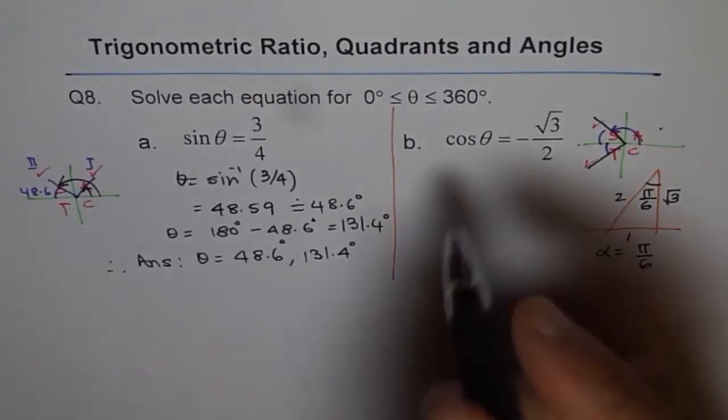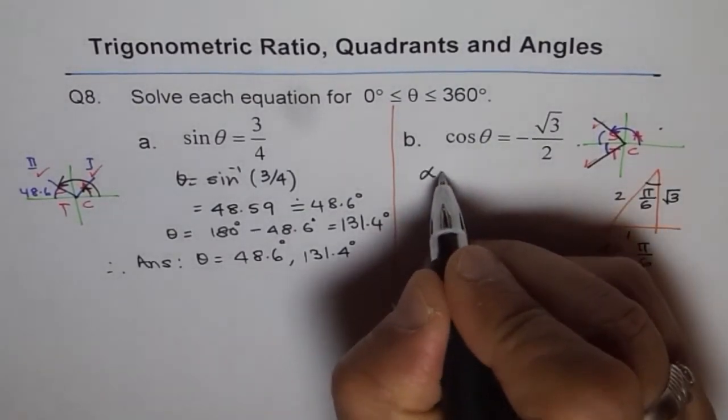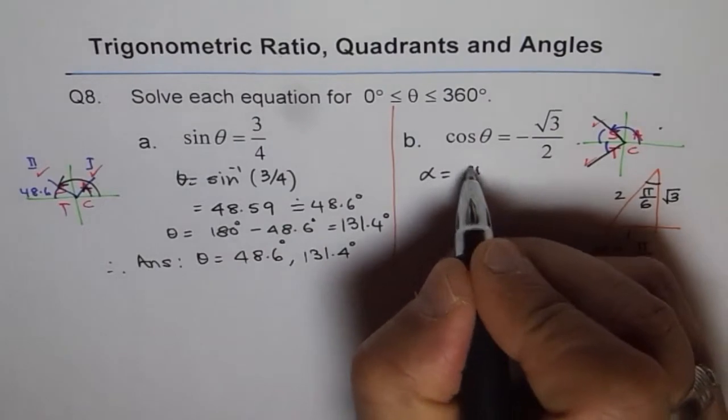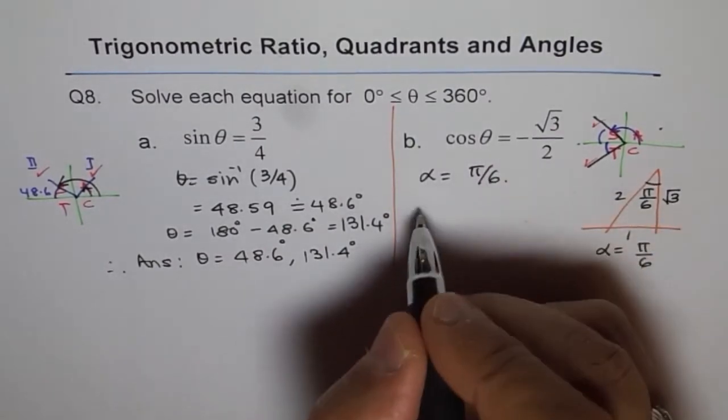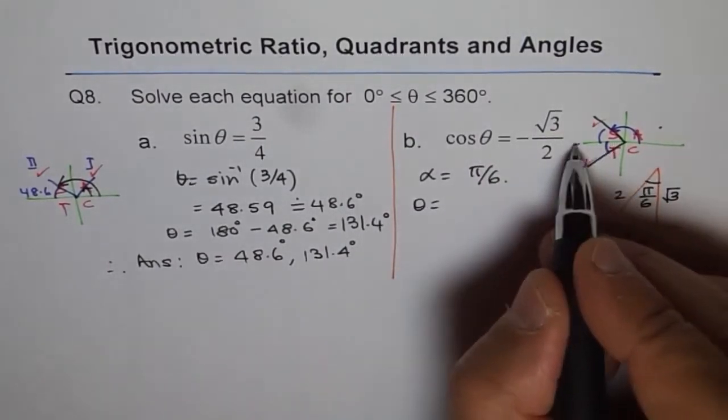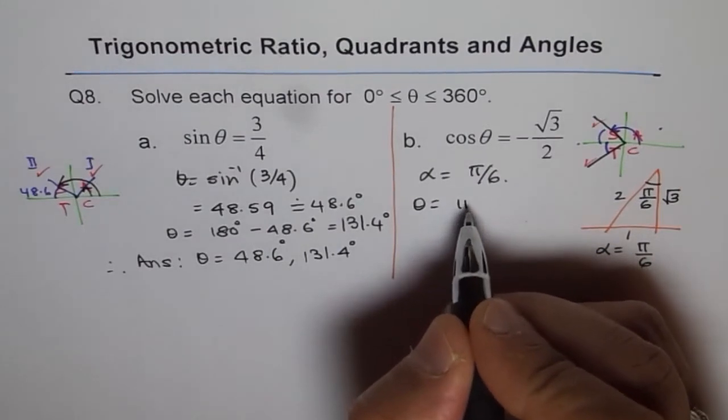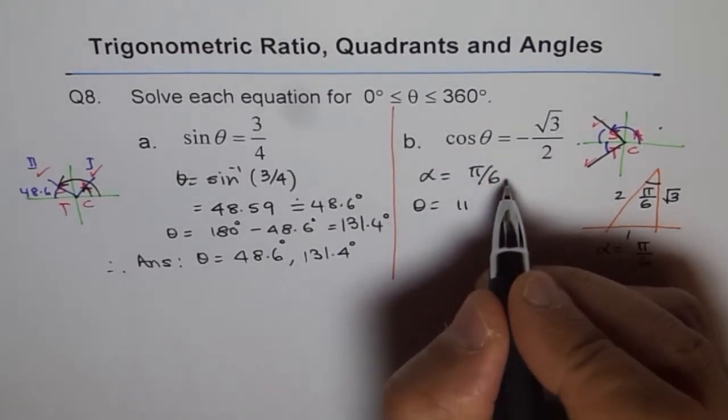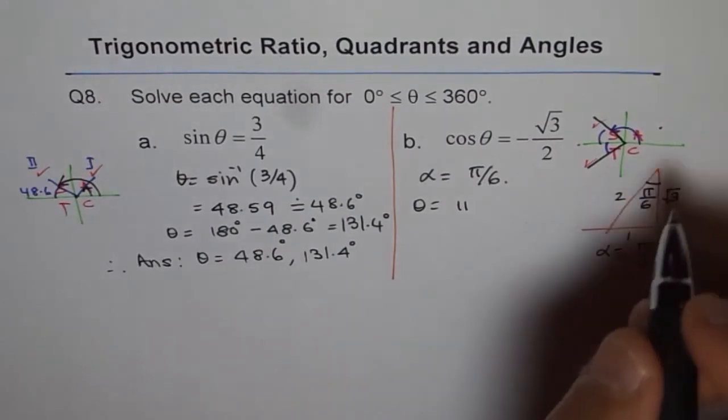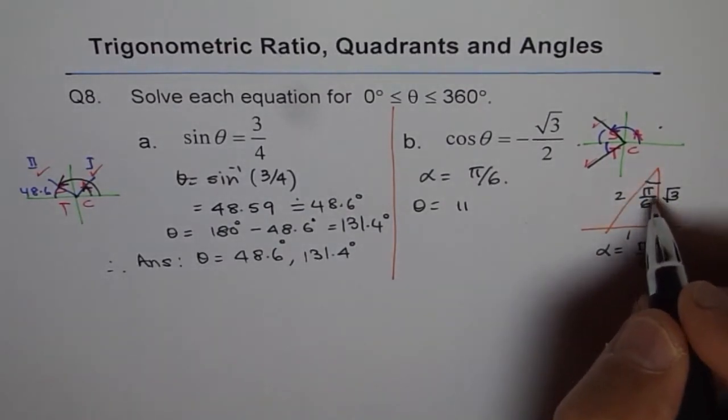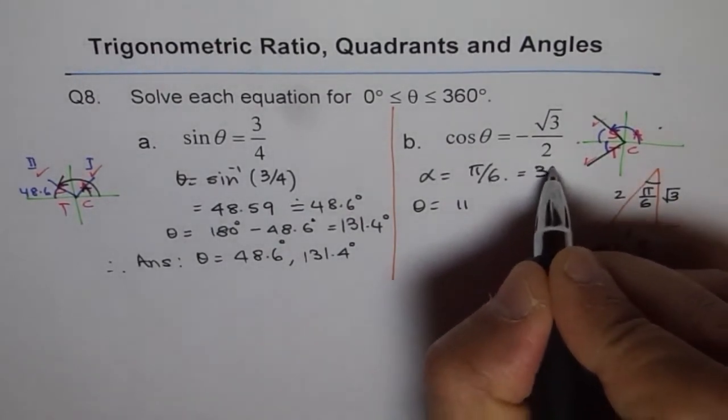So our solutions for this is we will write acute angle is π/6. Therefore angle θ is equals to 180. That is π. We are doing in degrees. Let me not write π/6 here. So I will write 30 degrees. So it is 30 degrees.